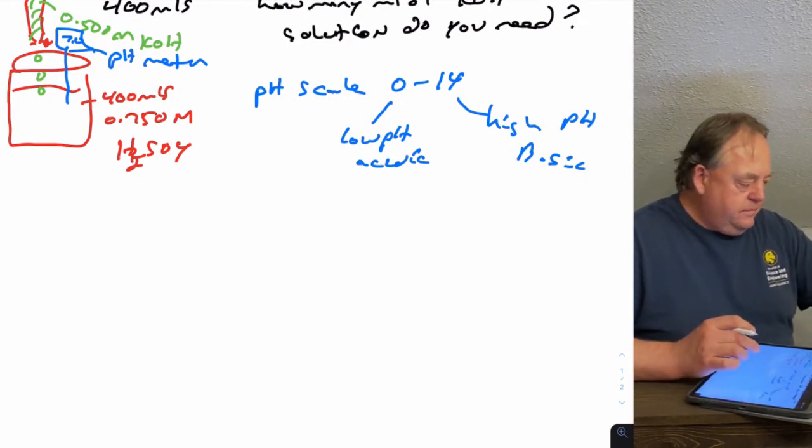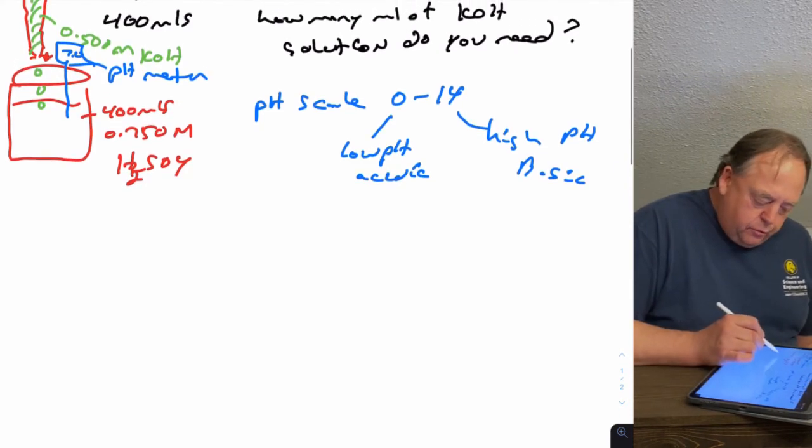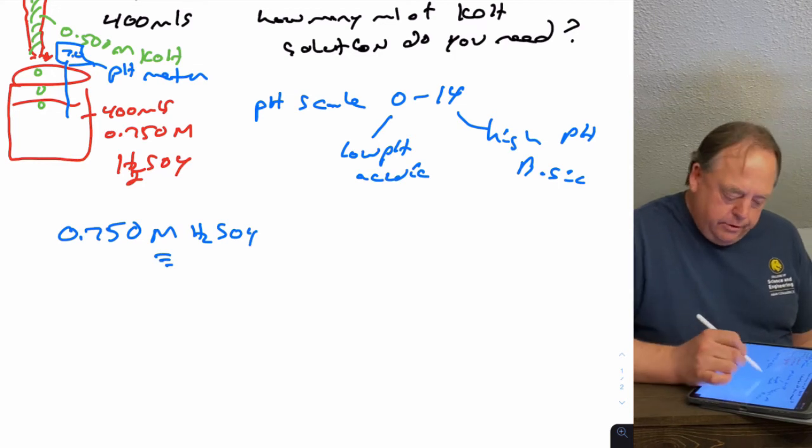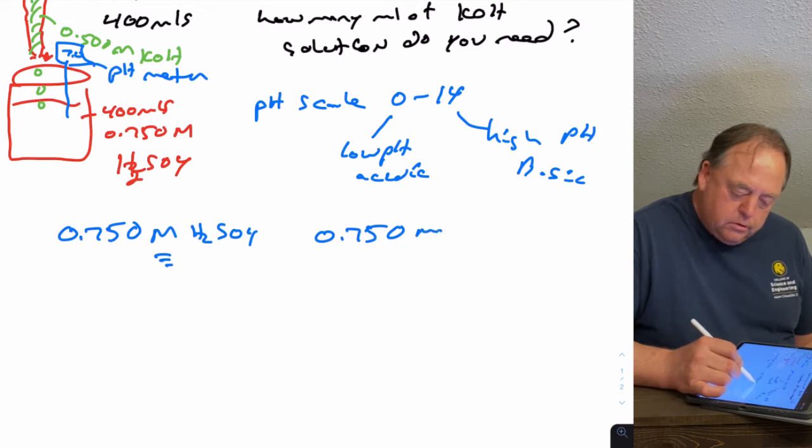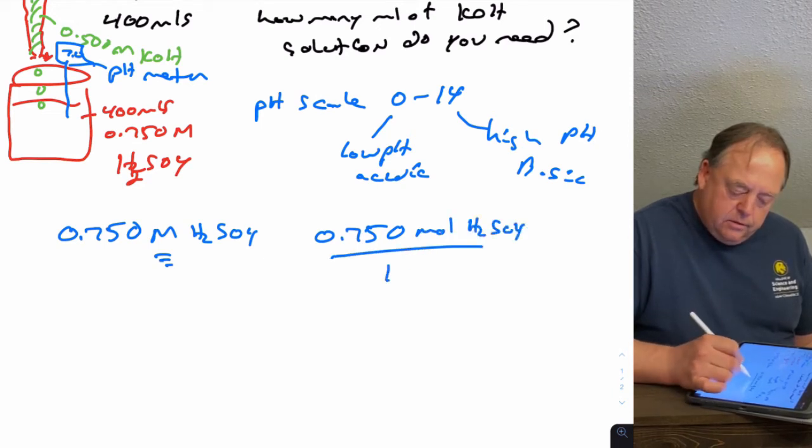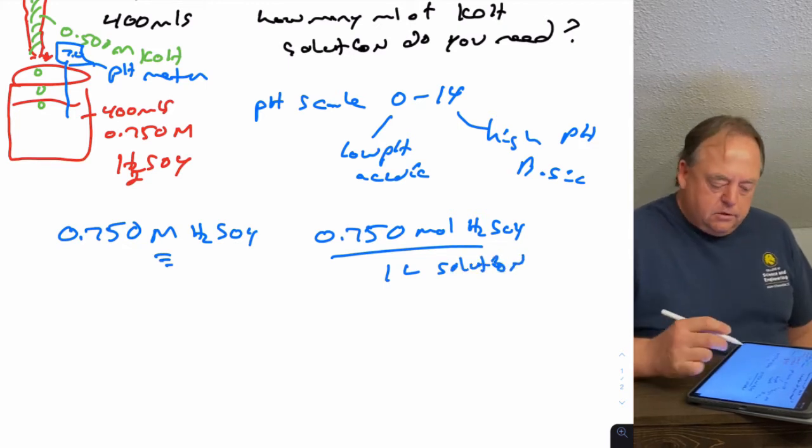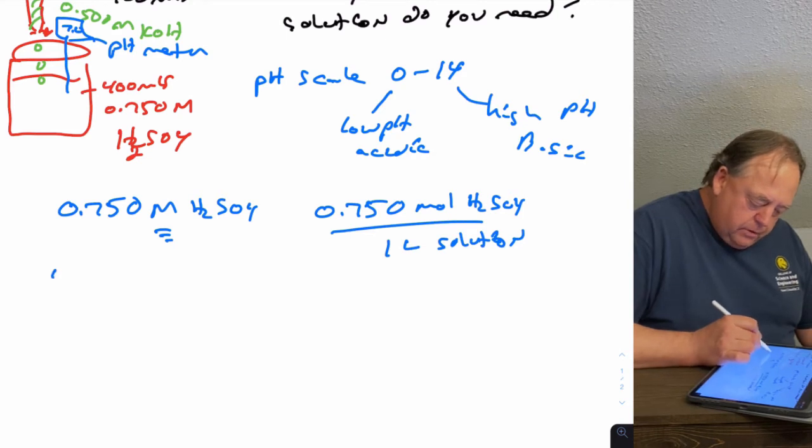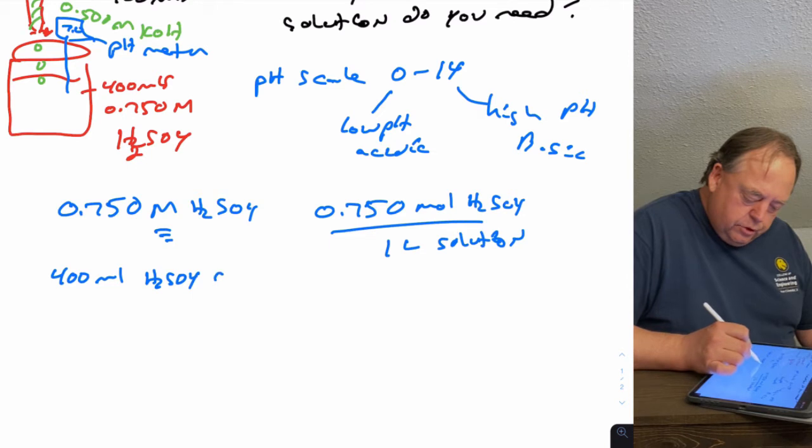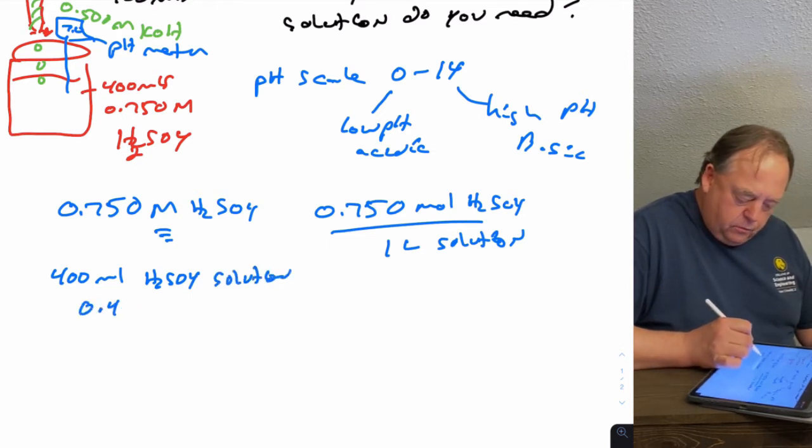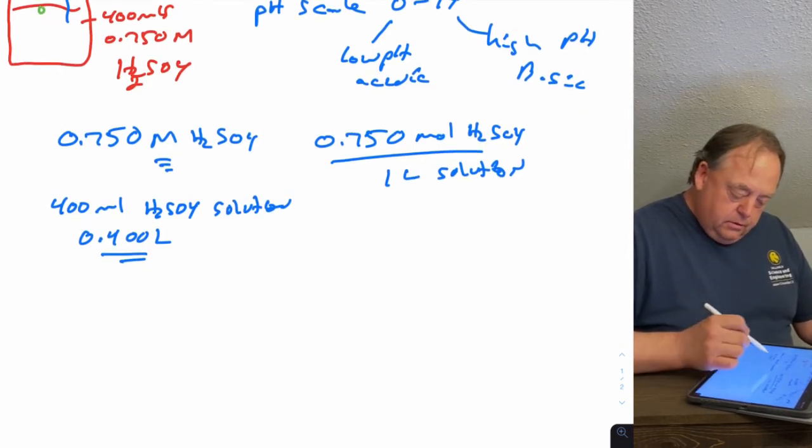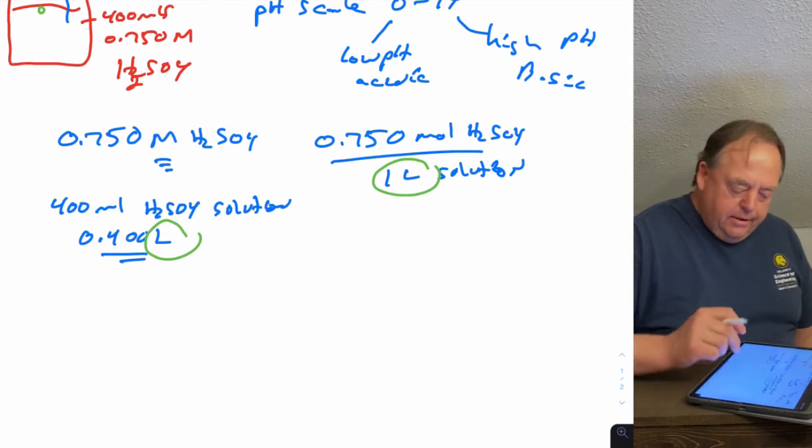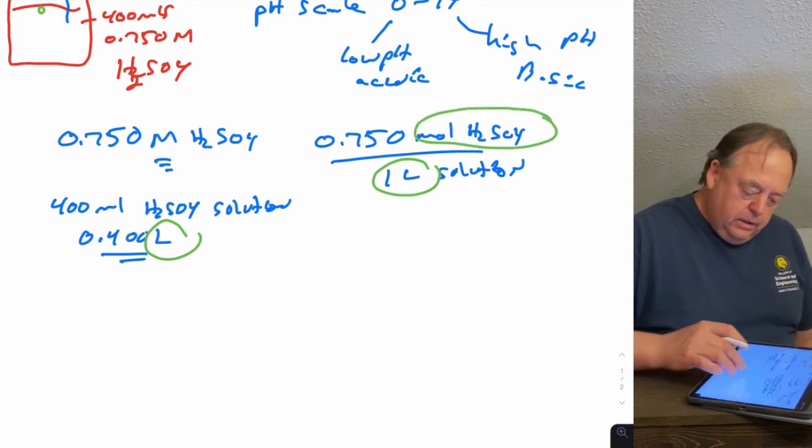You know we're set to work through the math. You basically have three numbers: you have 0.750 molar H2SO4, and again, anytime you see capital M, you should just write it instead as 0.750 moles of H2SO4 per liter of solution, so that you can set up the dimensional analysis and cancel units out. You have 400 mils of the H2SO4 solution, which is the same thing as 0.400 liters. We have a volume here and a volume here, so we can use these two numbers and cancel volume out to get to moles, which is what we want to do first.